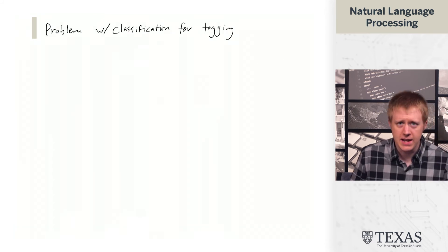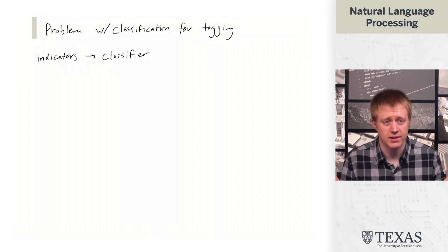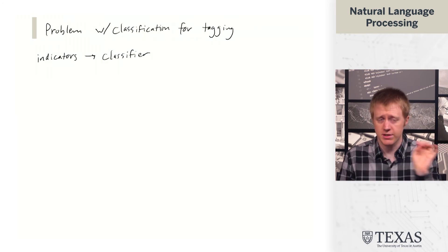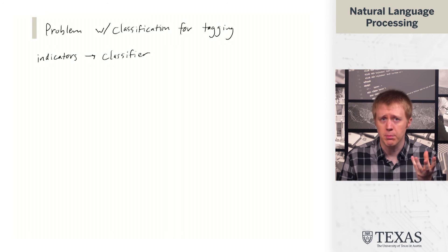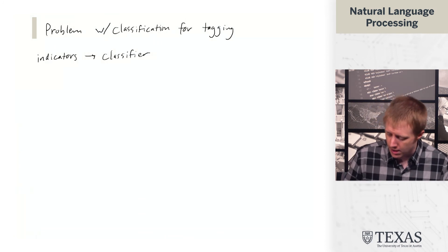So we could take these indicators and feed them into a classifier. And so we can basically take a labeled data set of part-of-speech instances, treat each position in every sentence as a example, and feed that and train on that, and produce a classifier.